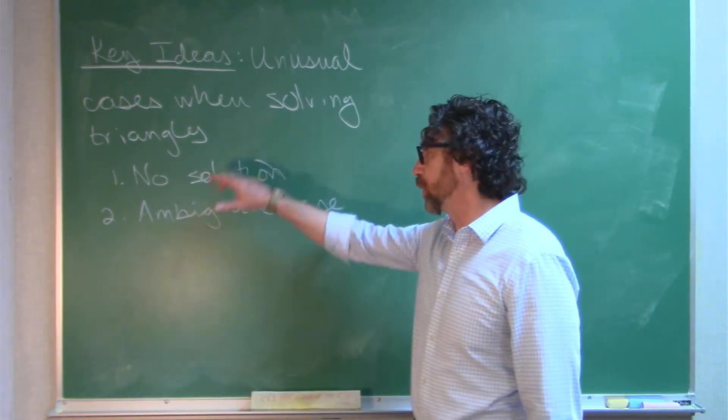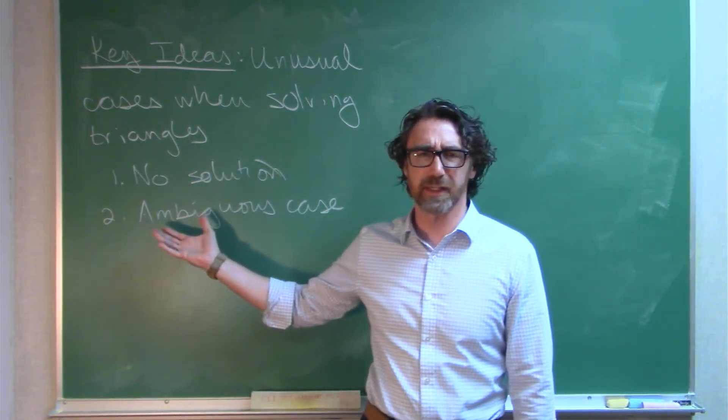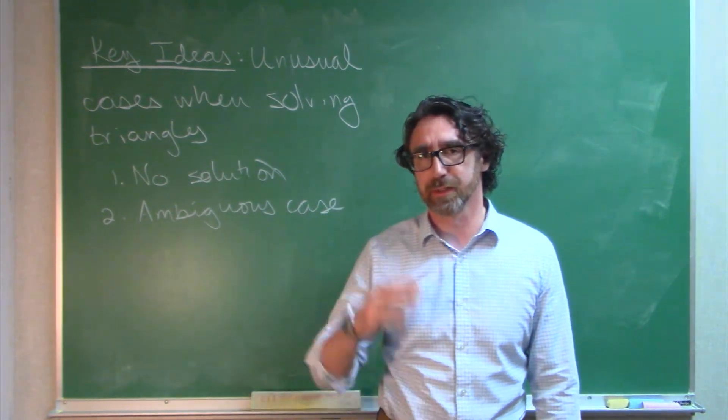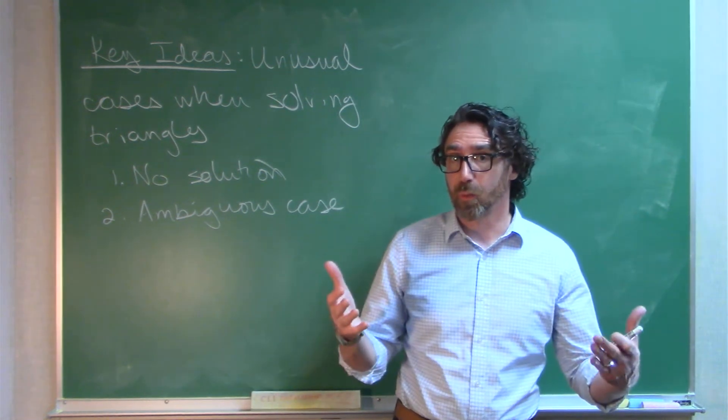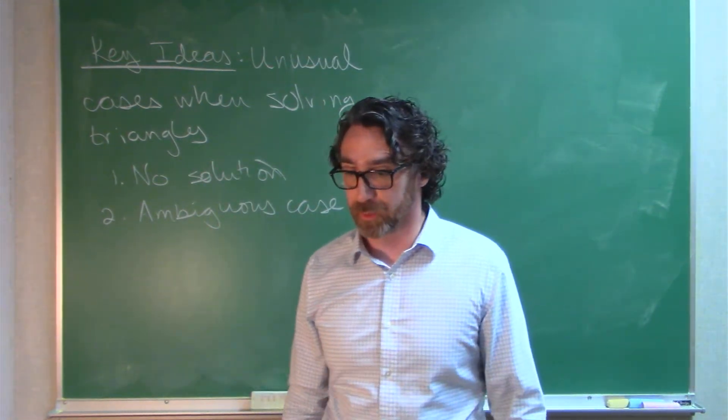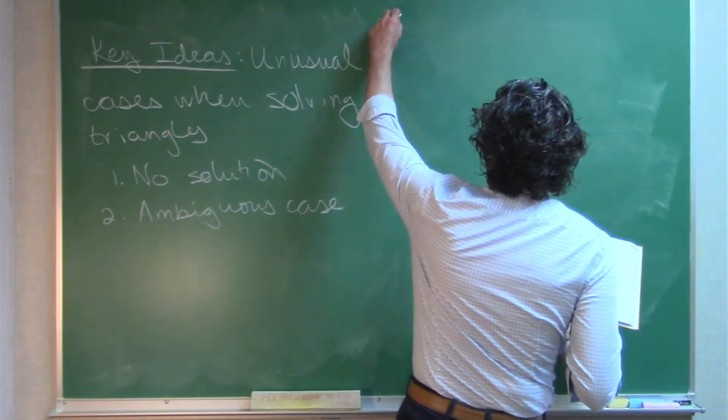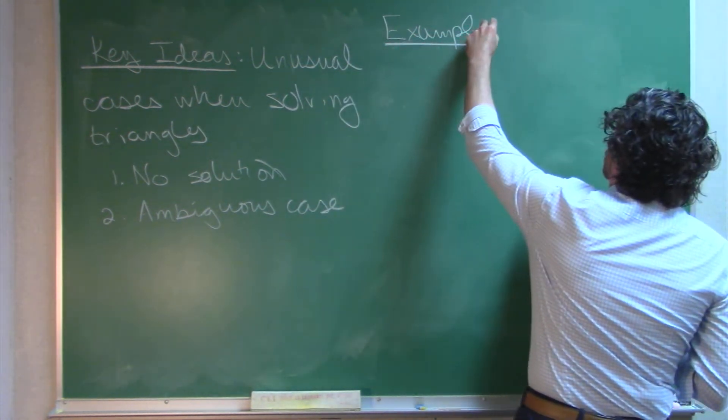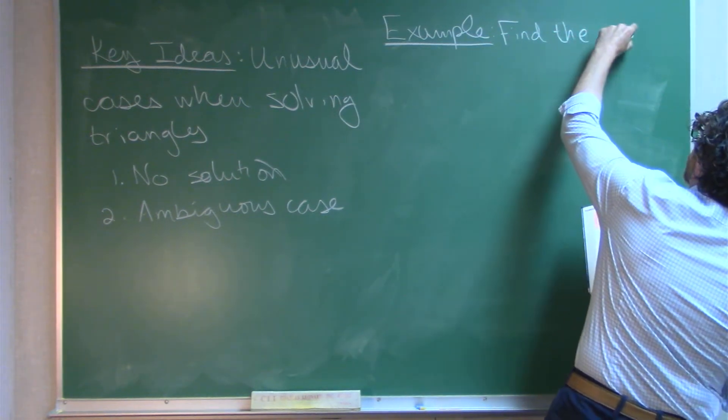But we're going to look at two what I'll call unusual cases. Firstly is the case of no solution. We've actually already seen some examples of that. And the second is something called the ambiguous case, and then we'll look at an example where we try to figure out what's happening. Do we have a solution or do we have the ambiguous case? So let's just jump right in and look at an example, which I will pull out of our textbook here.